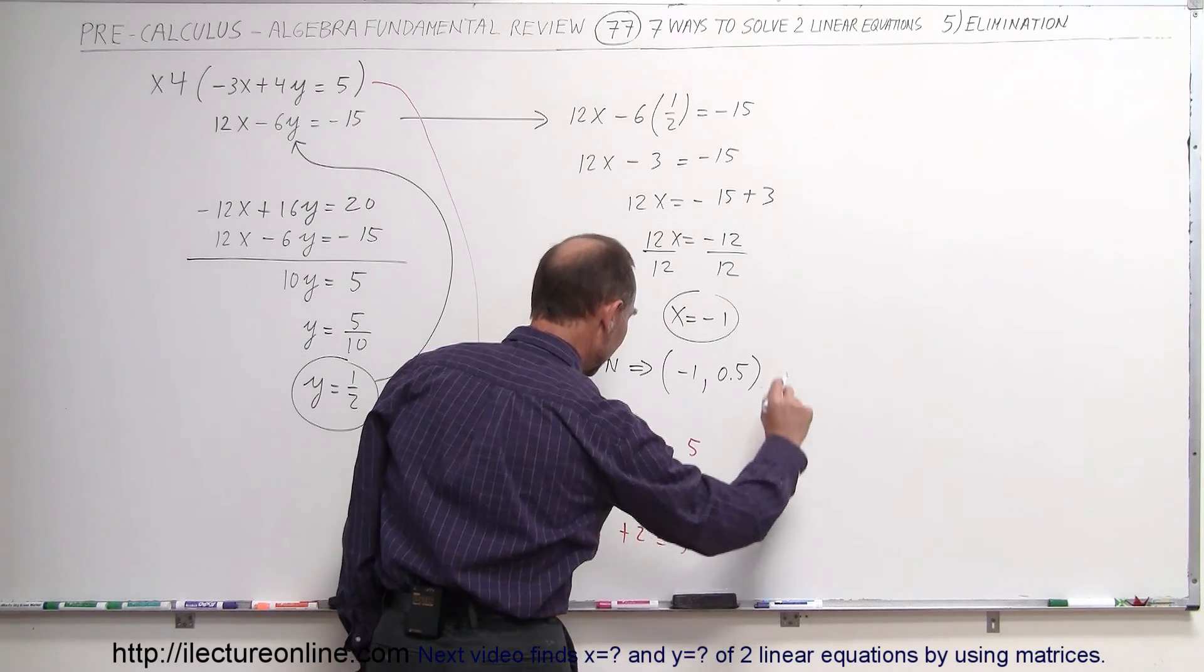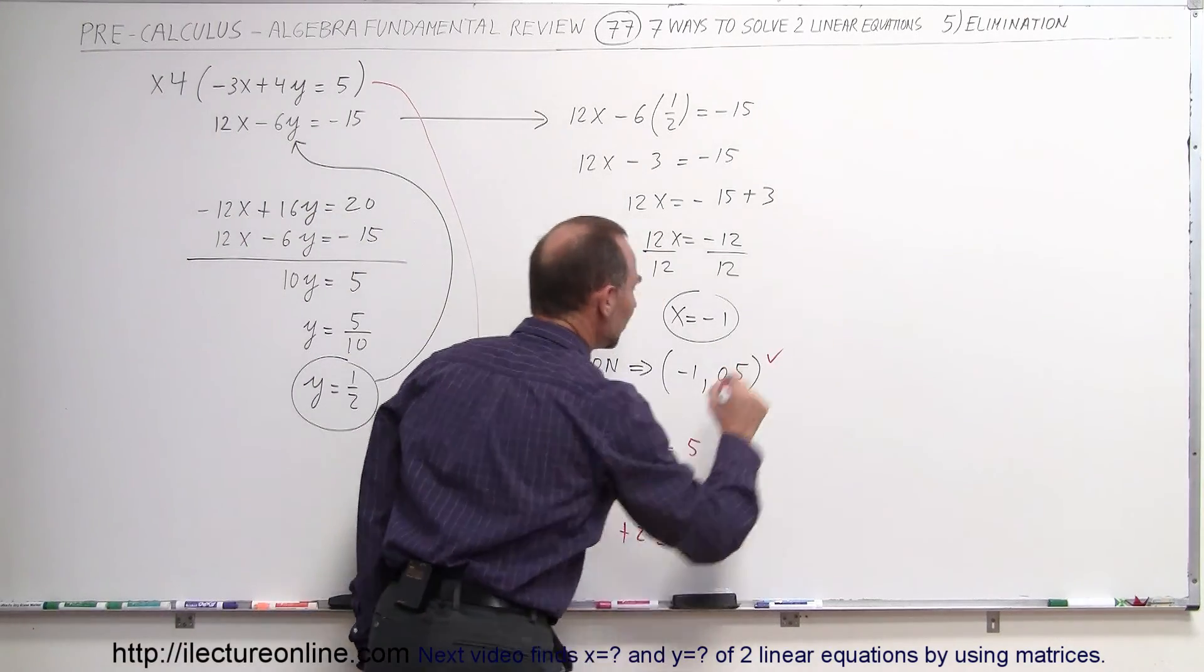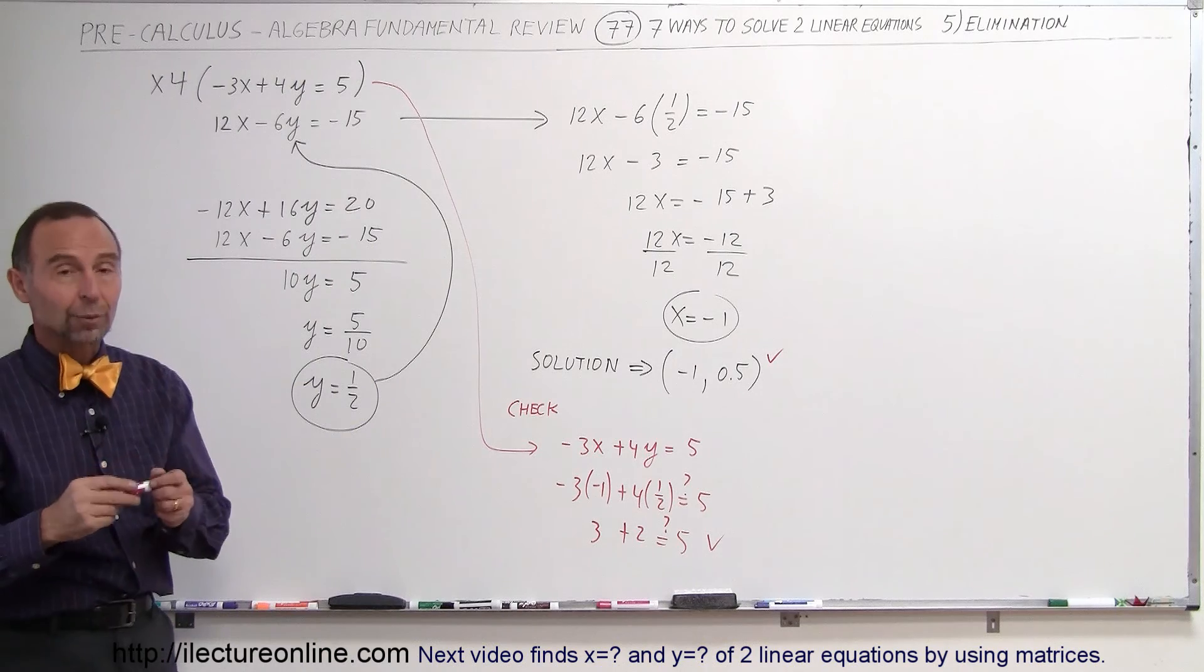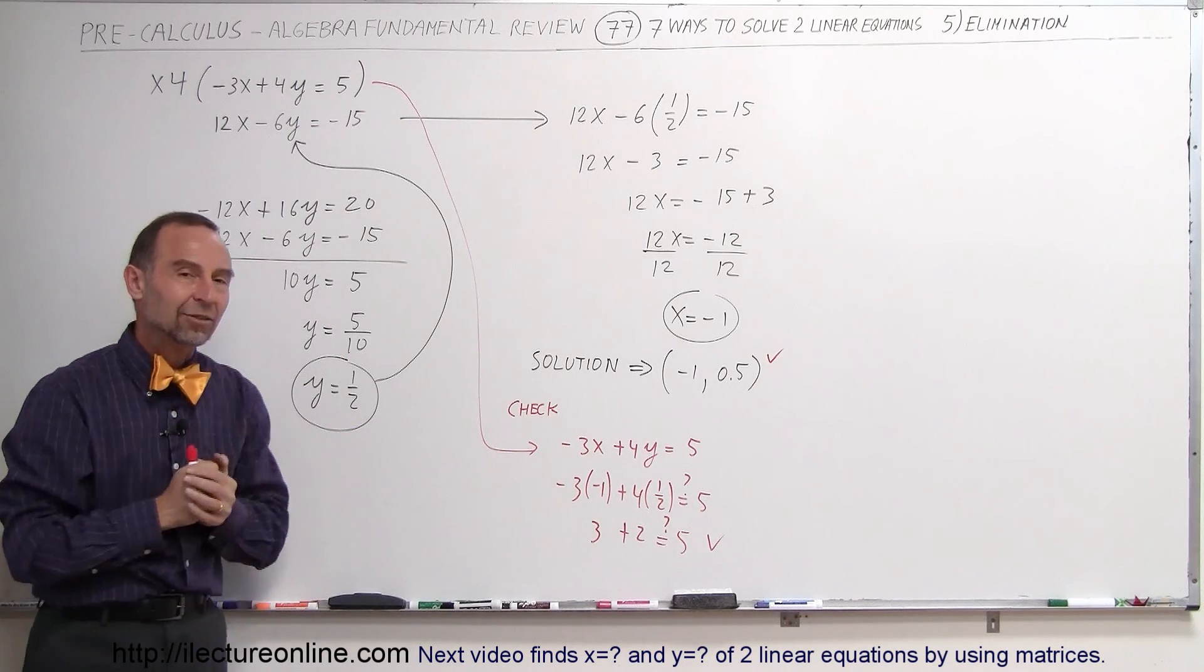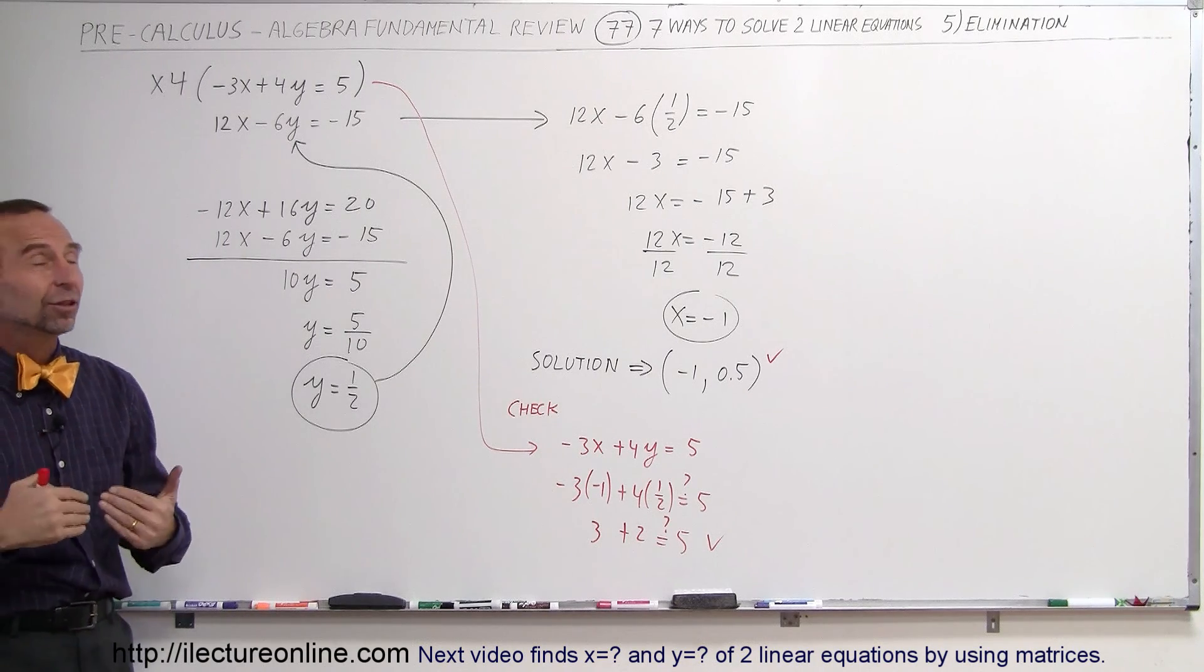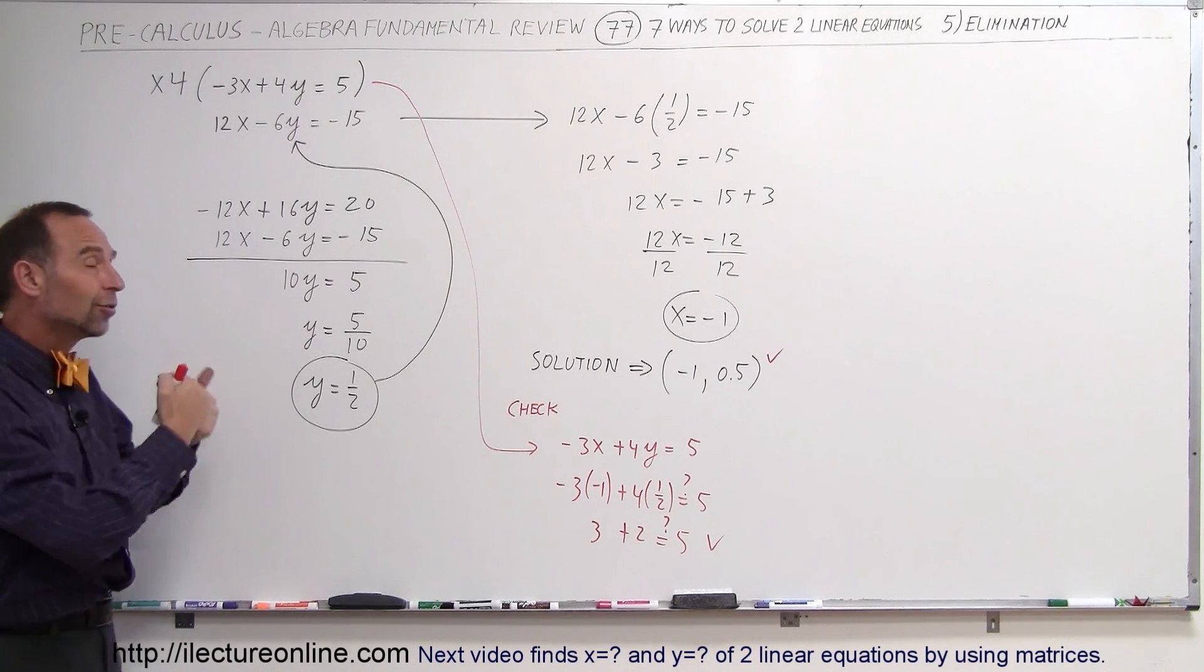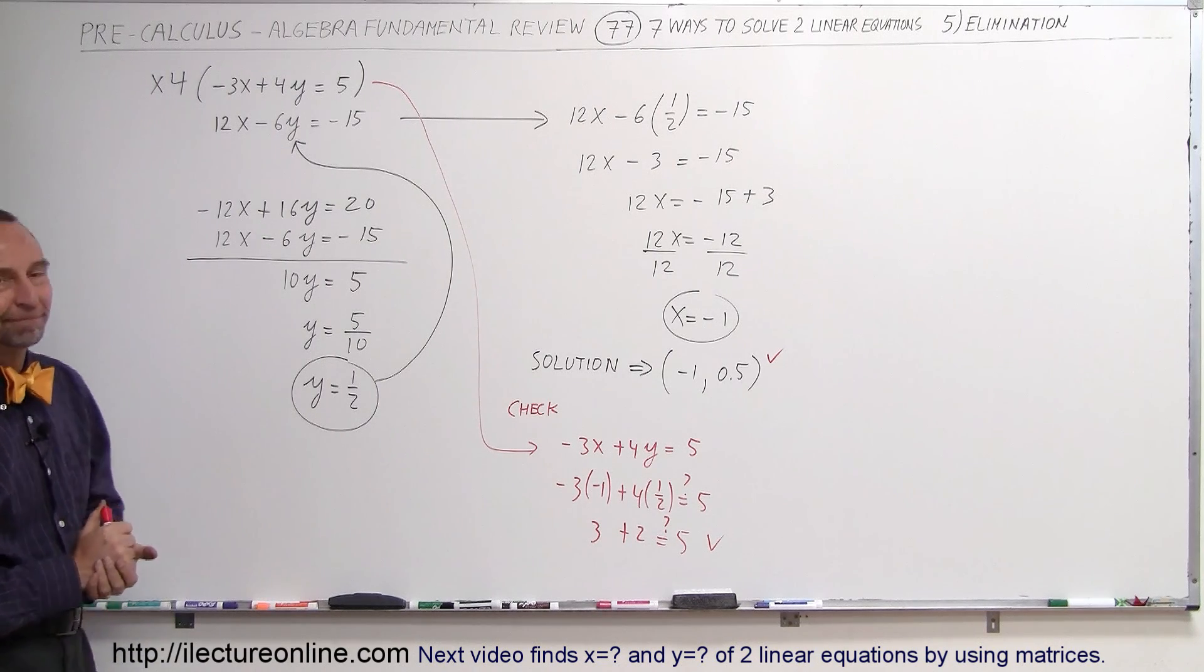And it looks like it is. So, therefore, I found the correct solution. That's, indeed, the solution to our problem, meaning we were trying to find the place where the two lines cross. That's the x and y value at that particular point. And that's how we used the method of elimination, which, again, in this particular case, was probably the best way to do this problem. That's how we do that. Thank you.